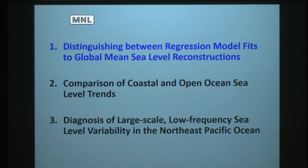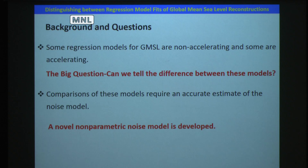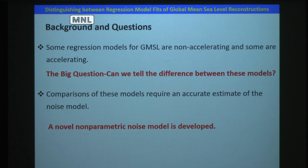I present a comparison of regression model fits to global mean sea level reconstructions. Global mean sea level has been rising over the last more than 100 years. Regression models are typically used to infer the rising rate. Some models assume a non-accelerating trend, while some models are accelerating. The consequences for future sea level projections are very different, so it is important to distinguish between these models.